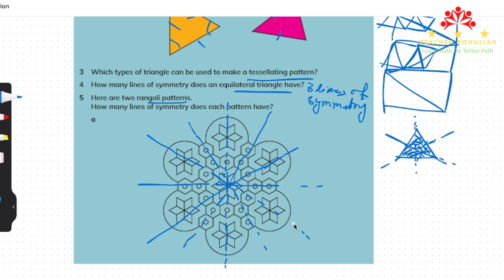Let's count how many lines of symmetry we have: one, two, three, four, five, and six. We have six lines of symmetry in this rangoli. We have six because each of these six lines cuts the rangoli into two equal parts that are exactly the same.